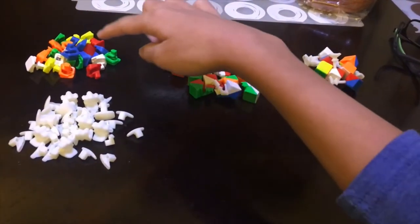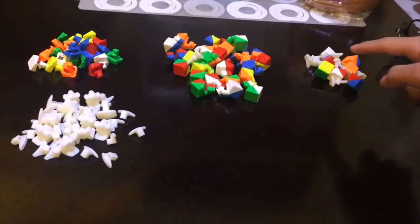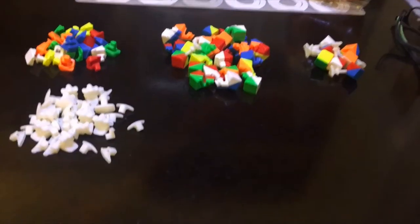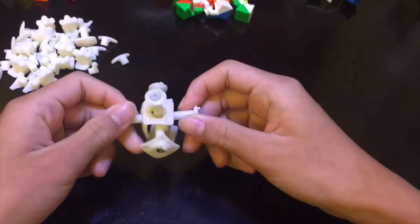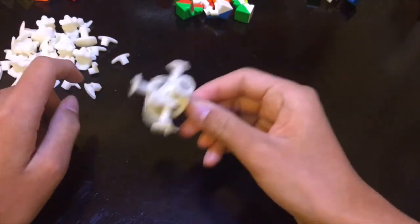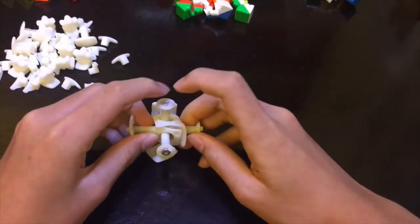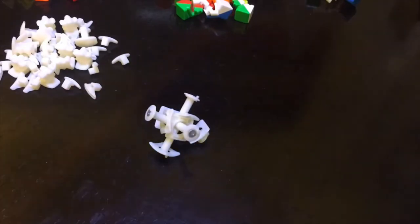So right there we have centers, edges, corners, and internal pieces. Now we can look at the core and it's got some flea pieces right here. Anyways, we have to unscrew the screws first so I'm going to do that.